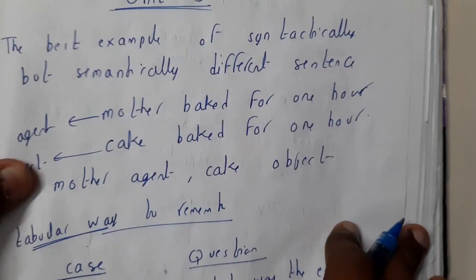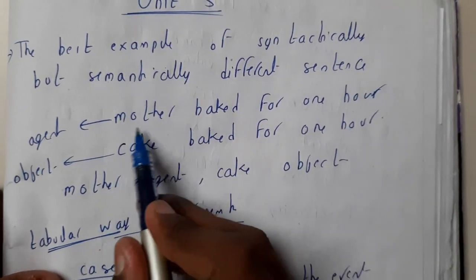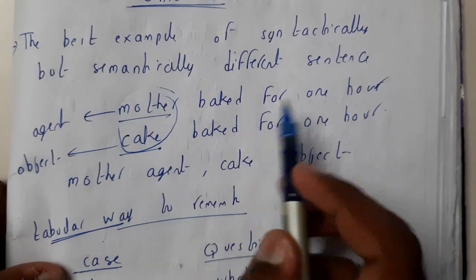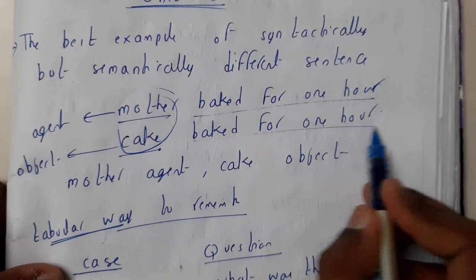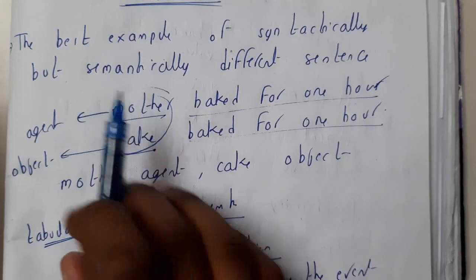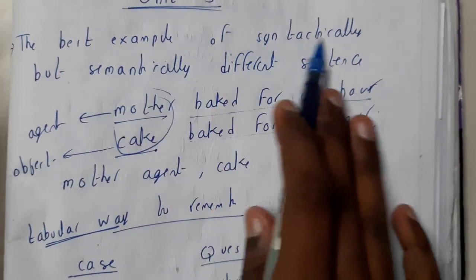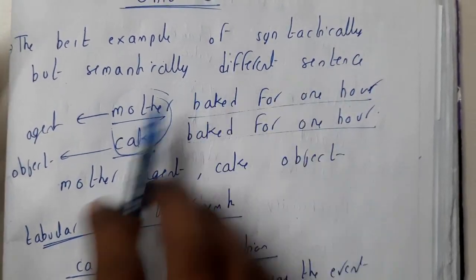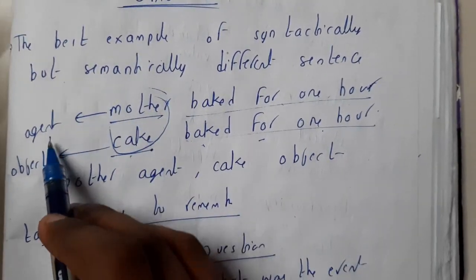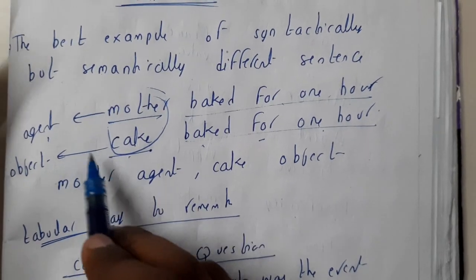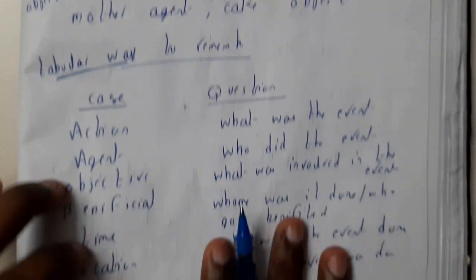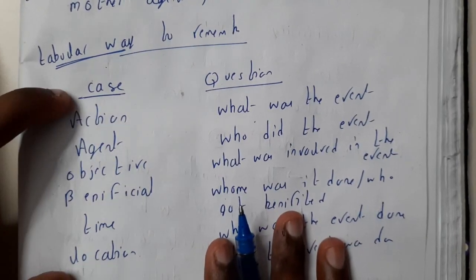If you ask what syntactically same but semantically different looks like — consider 'the mother' and 'the cake': the initial parts, the agent or object, are changing whereas the rest of the sentence is constant. The best example is: 'Mom baked for one hour' versus 'Cake baked for one hour.' Here, mom is the agent and cake is the object — both are syntactically similar but semantically different.